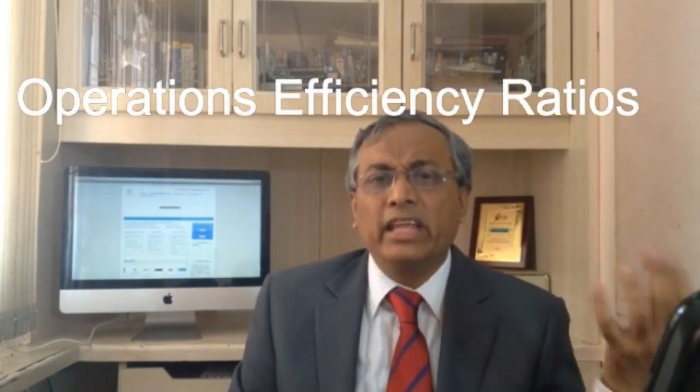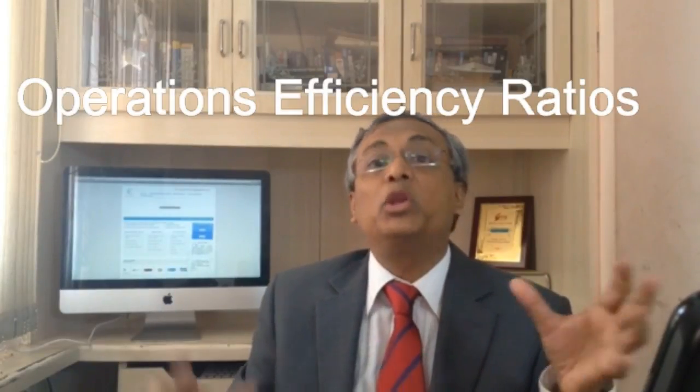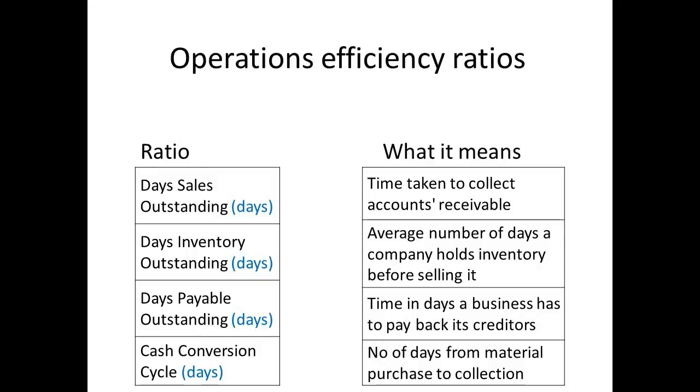How do you know that your business is running efficiently? Your balance sheet and profit and loss account give clues through operations efficiency ratios. One is called Days Sales Outstanding — how long does it take for your company to collect its accounts receivable? Another is Days Inventory Outstanding — the average number of days a company holds inventory before selling it. Then there is Days Payable Outstanding — the time in days a business has to pay back its creditors. And there is the Cash Conversion Ratio — how much time it takes from investing in raw materials, processing into products and services, selling to your client, and getting the money back.